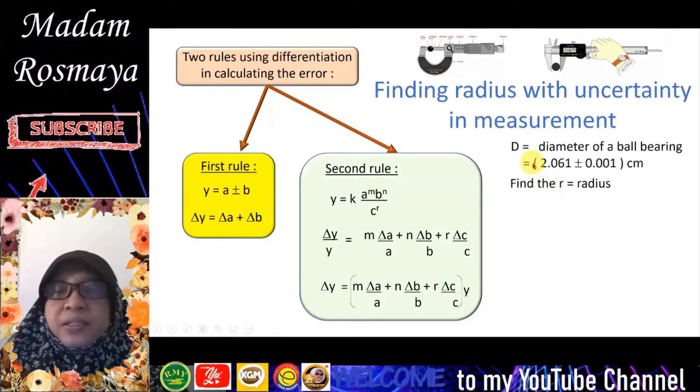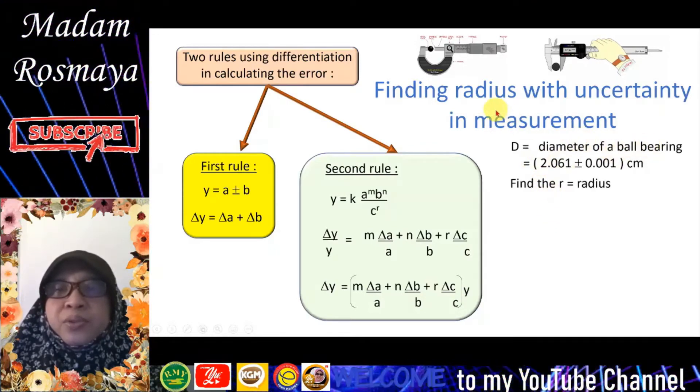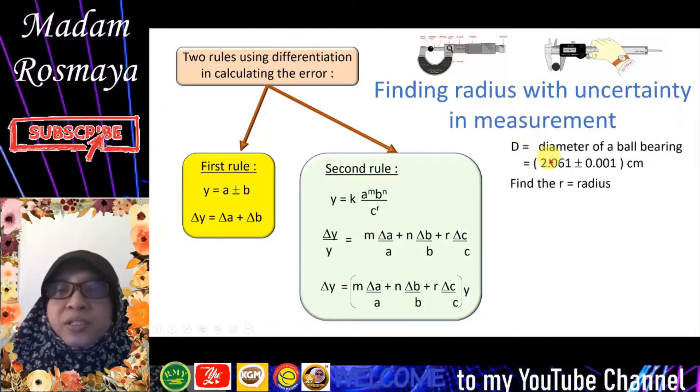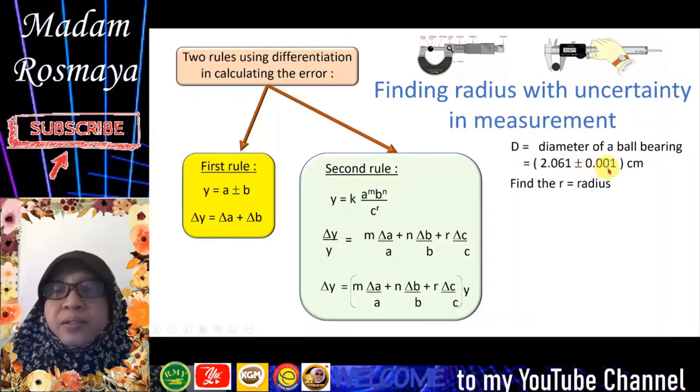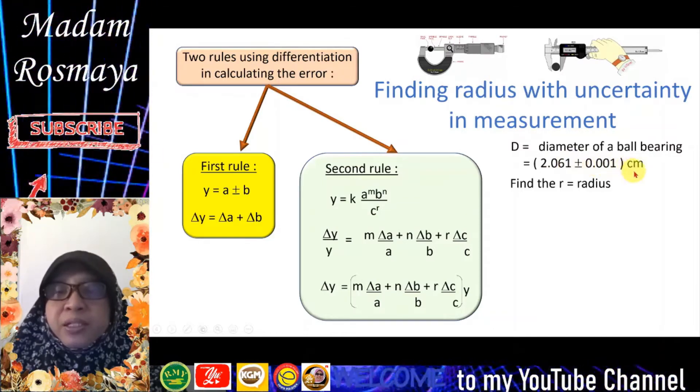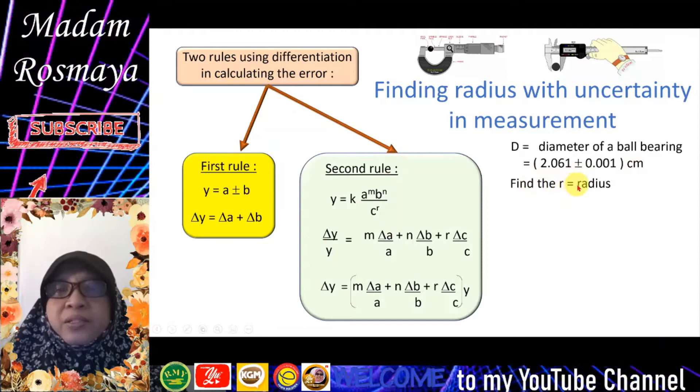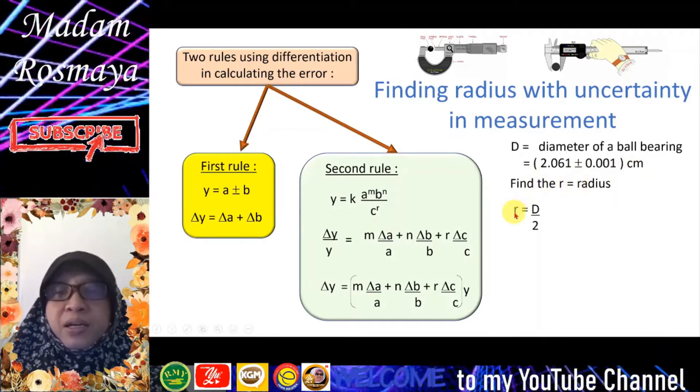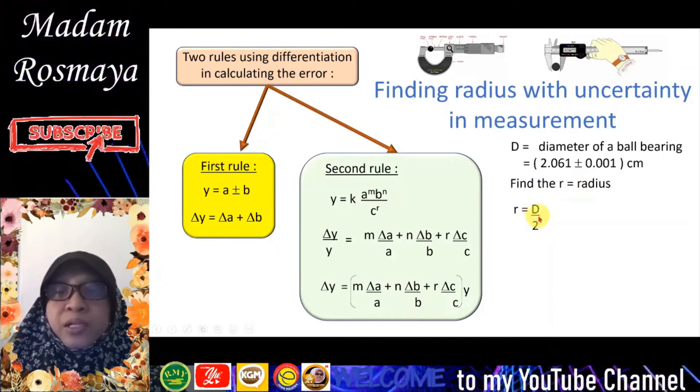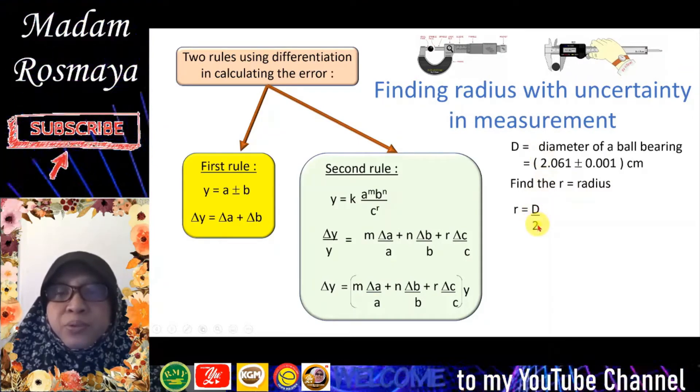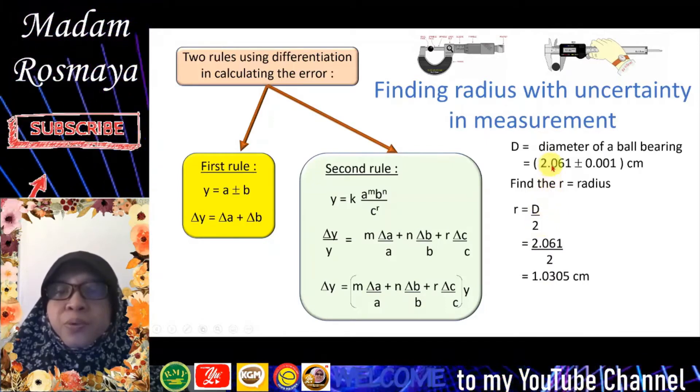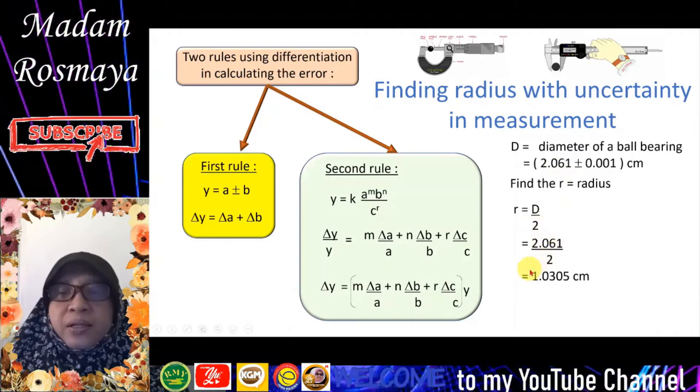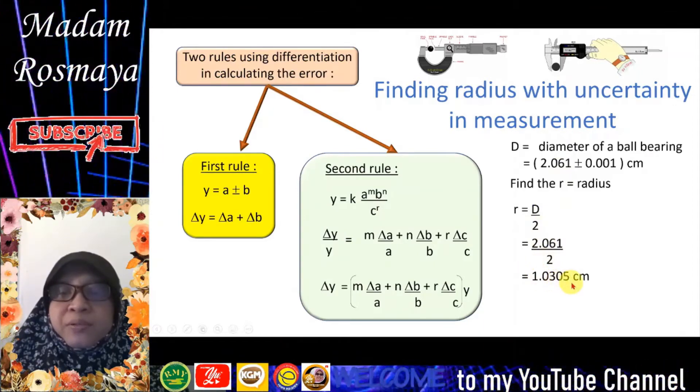Let's say the diameter of a ball bearing, measured using micrometer screw gauge, we get 2.061 ± 0.001 cm. So we are going to find the radius of the ball bearing. The formula is given by r = d/2, where d is diameter. So we substitute 2.061 into the equation, we get radius equals to 1.0305 cm.